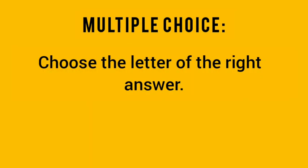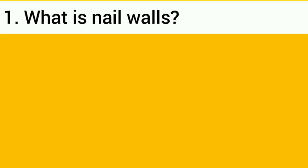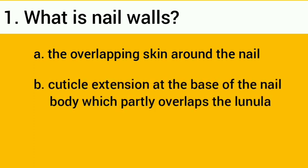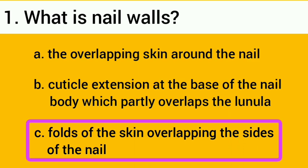Now let's have a short quiz. Choose the letter of the right answer. Number one: what are nail walls? A, the overlapping skin around the nail; B, cuticle extension at the base of the nail body which partly overlaps the lunula; C, folds of the skin overlapping the sides of the nail. The correct answer is letter C: folds of the skin overlapping the sides of the nail.